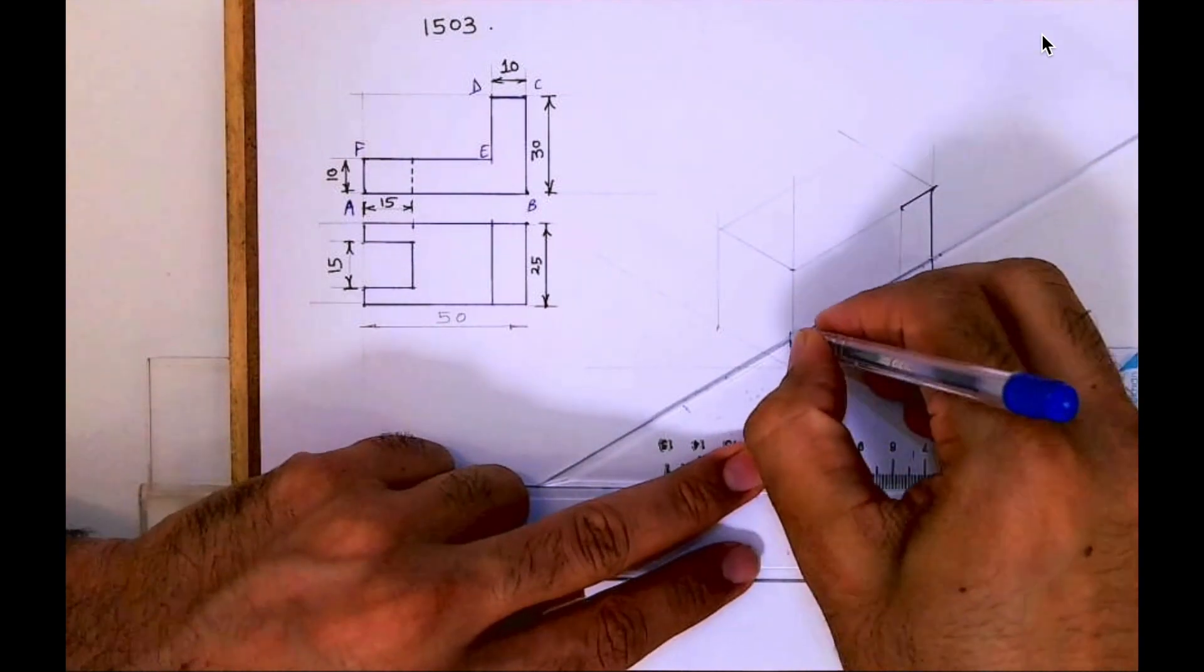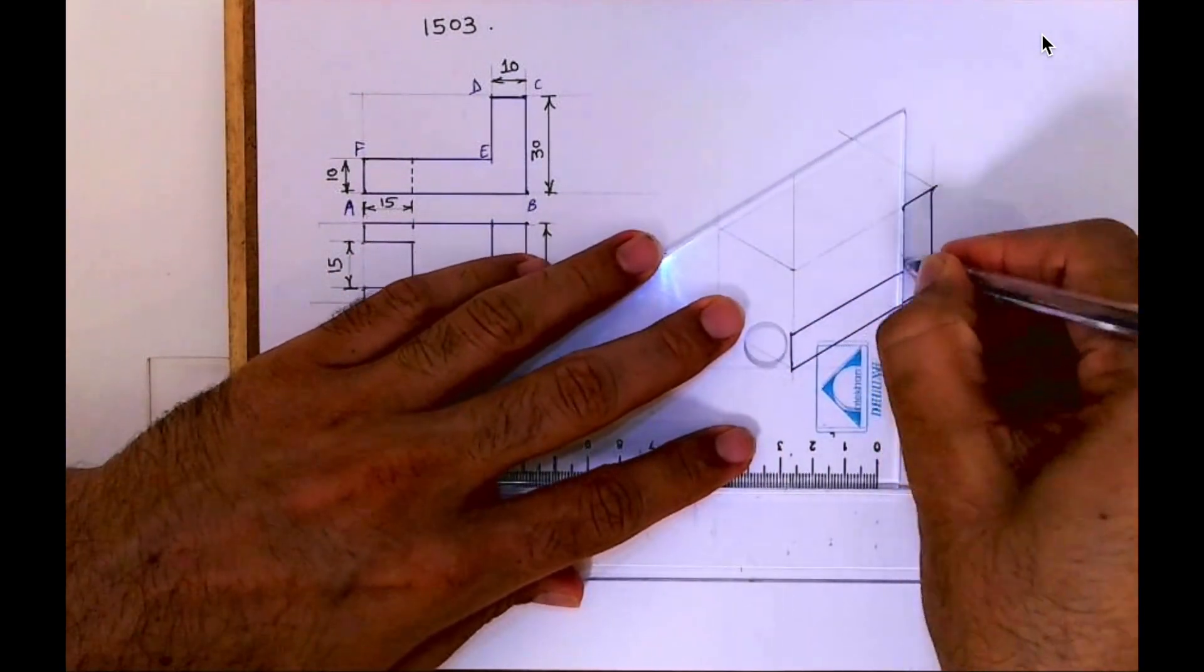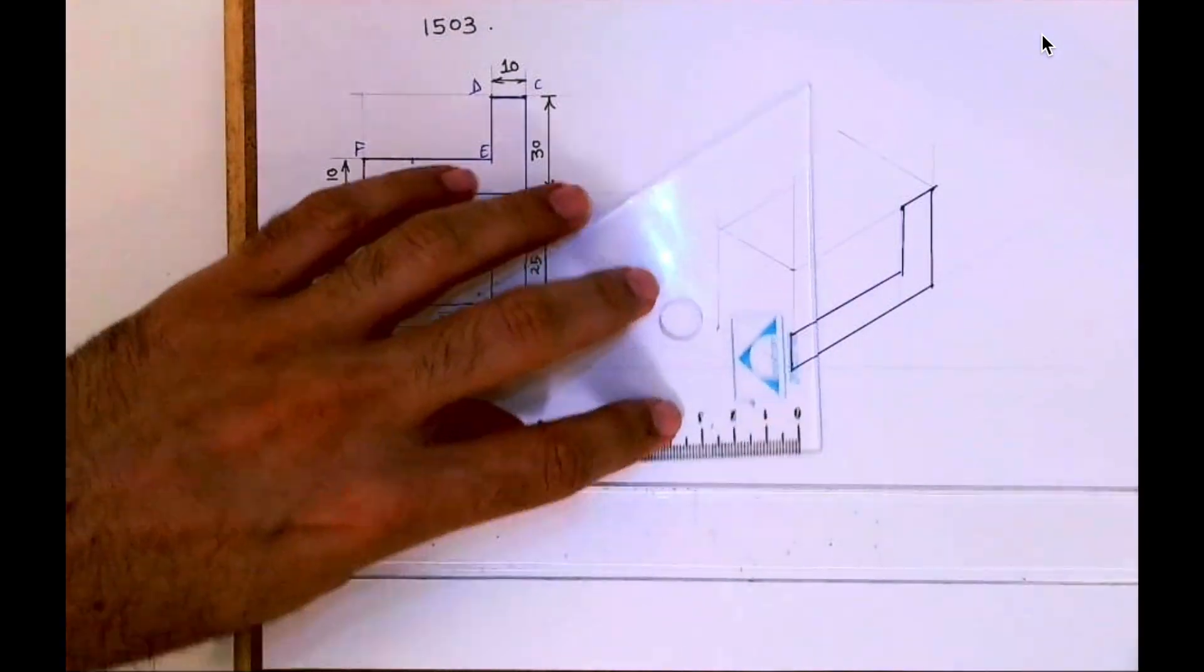Then I will draw a line like this, and from here a vertical line. So I'll get this L-shape.